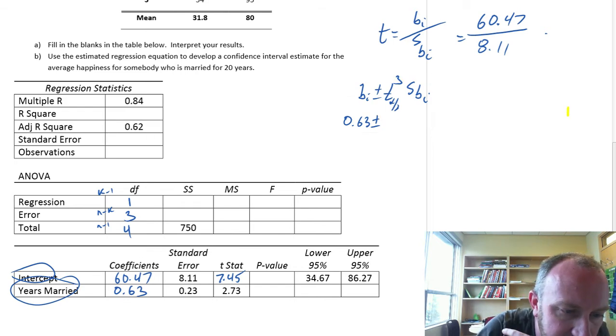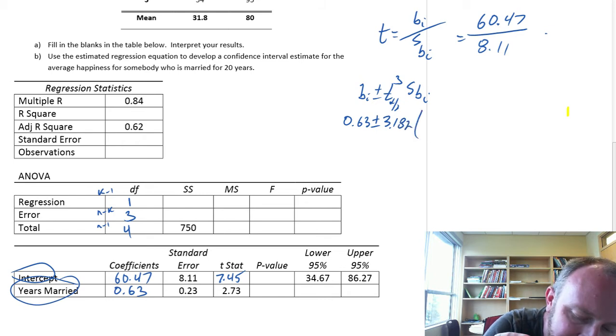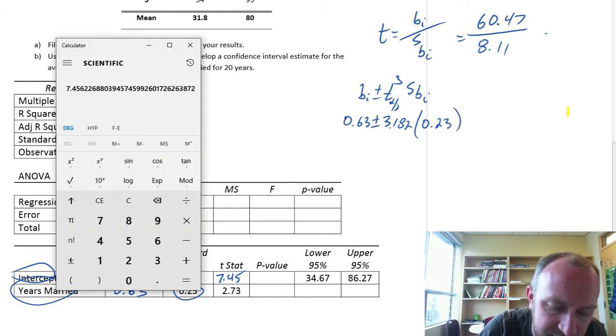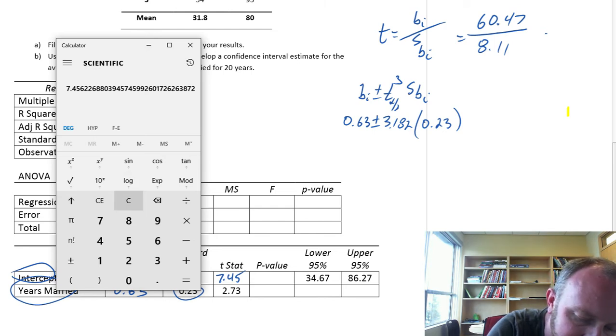I need a pen again. 3.182 times that standard error from here, 0.23. So this is going to give me, let's get our lower limit first.